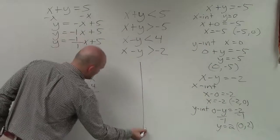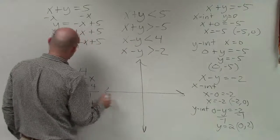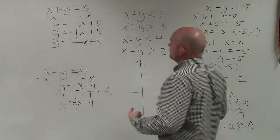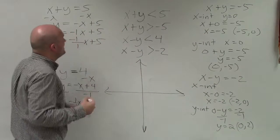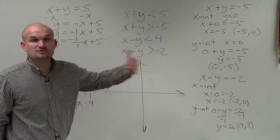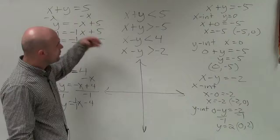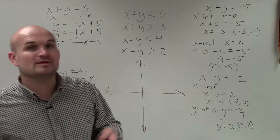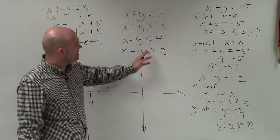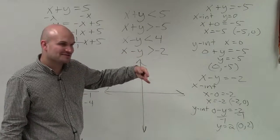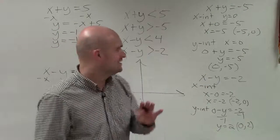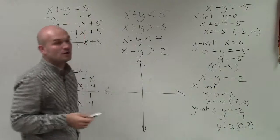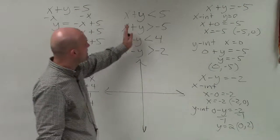Now let's get into the graphing. When graphing the boundary lines, you need to determine if the boundary line is part of the solution or not. The line is solid when we have greater than or equal to or less than or equal to symbols. Since all our inequalities use strict less than or greater than, the boundary lines are not part of the solution, so all lines will be dashed.